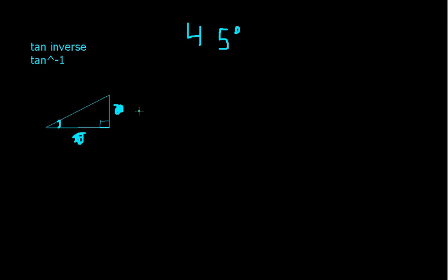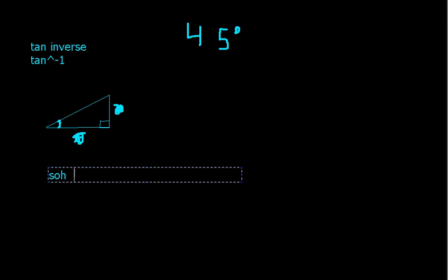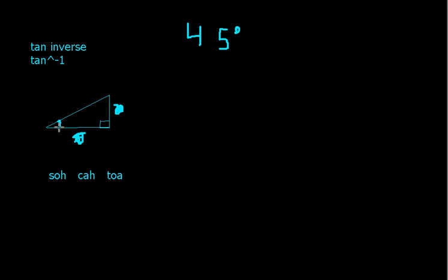What is tangent? SOHCAHTOA — sine is opposite over hypotenuse, cosine is adjacent over hypotenuse, and tangent of this angle is the opposite side over the adjacent side. So if these sides are the same, then a number divided by itself is just going to be 1. And what is that ratio kind of like? How much it goes up divided by how much it goes over — well, that looks like the slope.